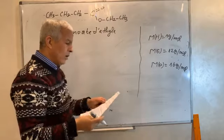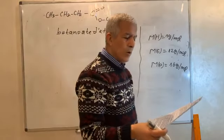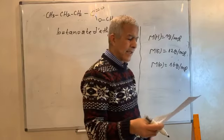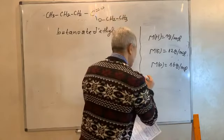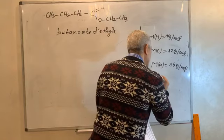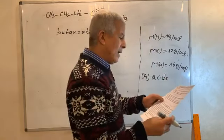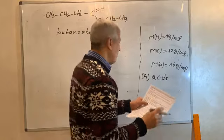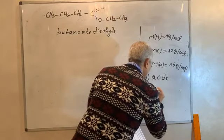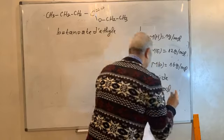On obtient le butanoate d'éthyle en faisant réagir un acide carboxylique A — donc A est un acide — avec un alcool B — donc B est noté alcool.